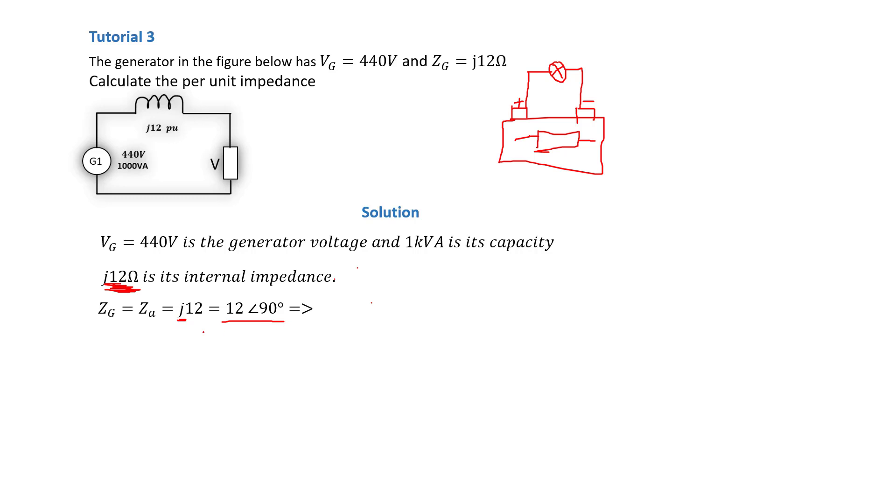Now that we know what the internal impedance of the generator is, or what we also call Z_actual, we can calculate Z_per unit. We can calculate the internal per unit impedance of the generator with the formula: Z_per unit internal equals Z_actual over Z_B. But what is Z_B? We've seen in the previous per unit tutorial that Z_B must be calculated with the base voltage of that zone squared and divided by the apparent power.